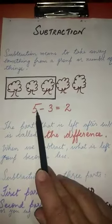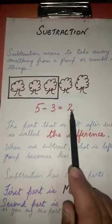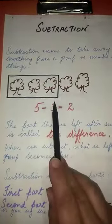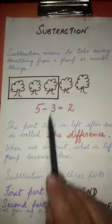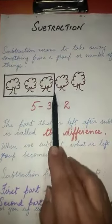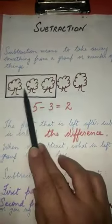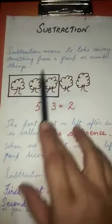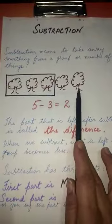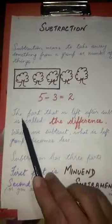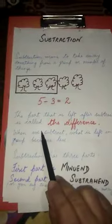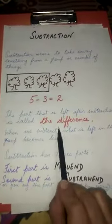Here, 5 minus 3 equals 2. That means from this group of 5 trees we are taking away 3 trees: 1, 2, 3. We are taking these 3 trees away. What is left? We are left with 2 trees.